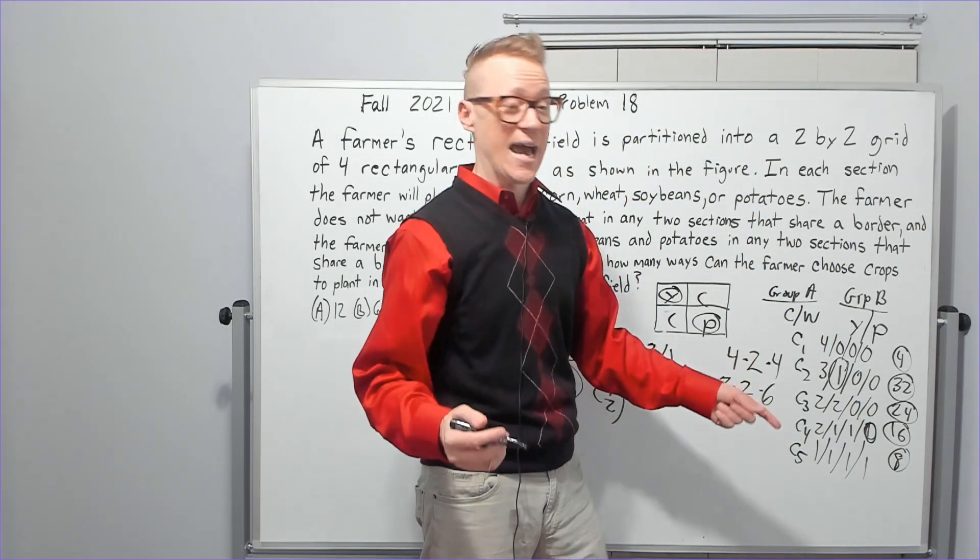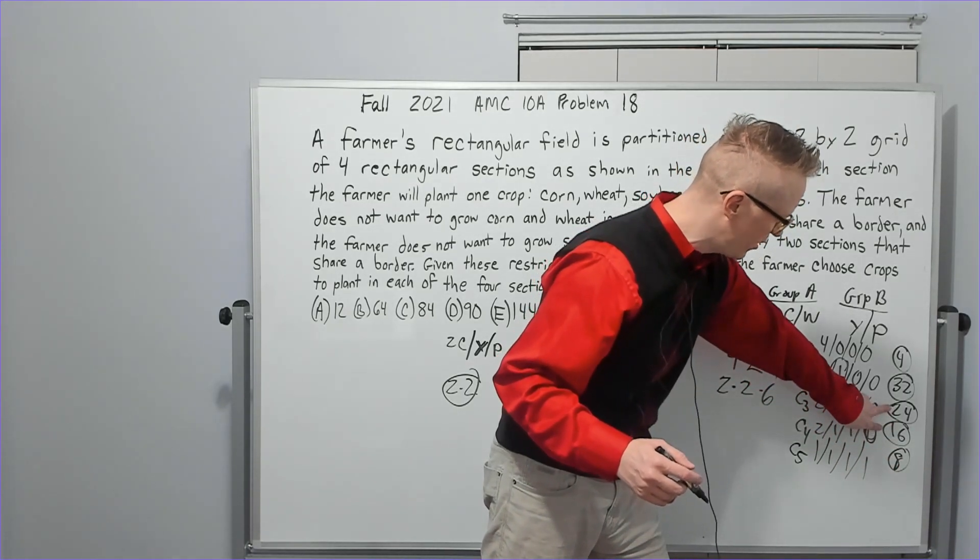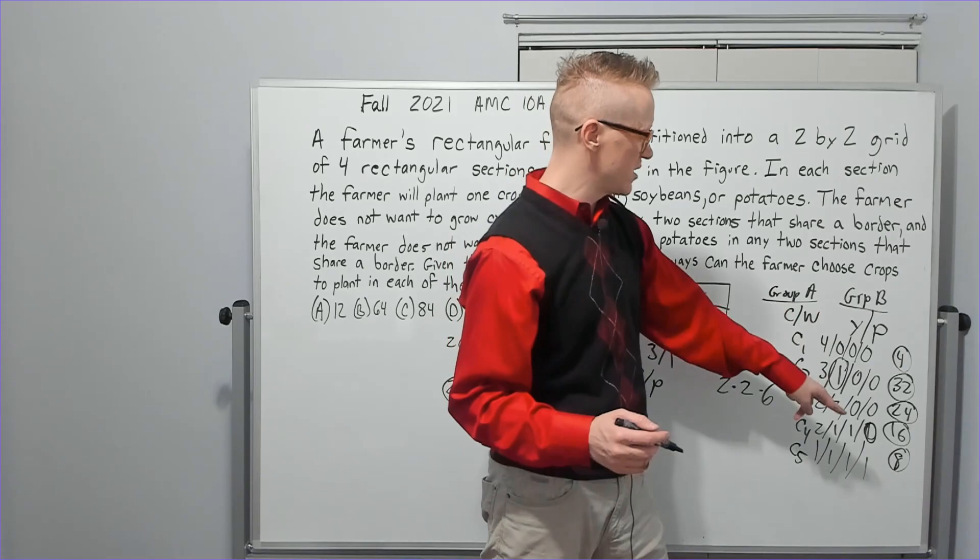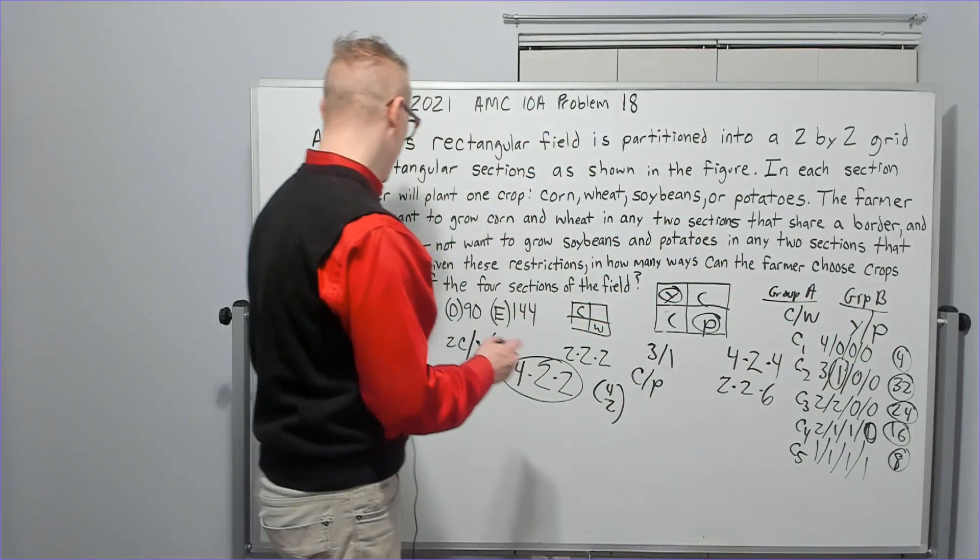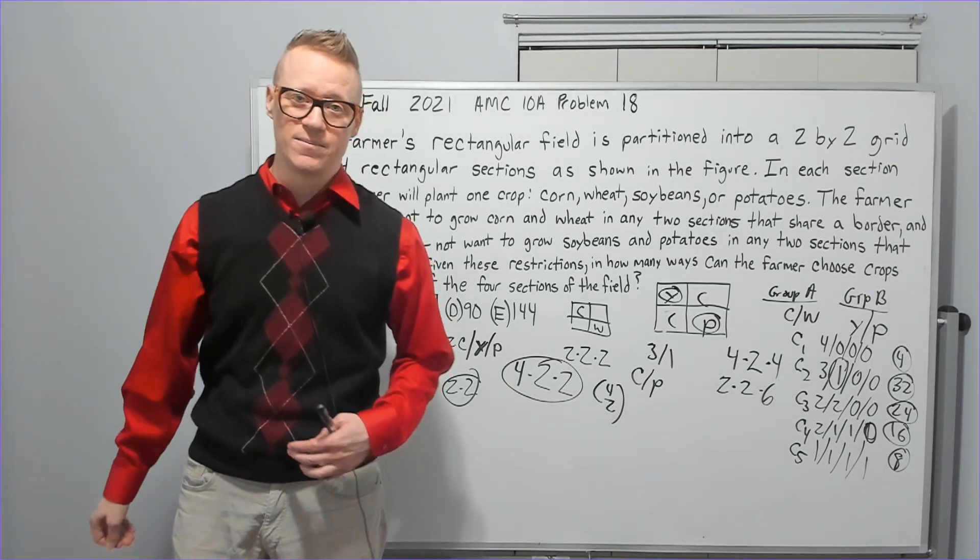Now it's just adding. So I've got 40 with 32 and eight. I've got another 40 with 24 and 16. So you've got 40 plus 40 is 80 plus four, 84. That's going to give you C. Let's get to problem 19.